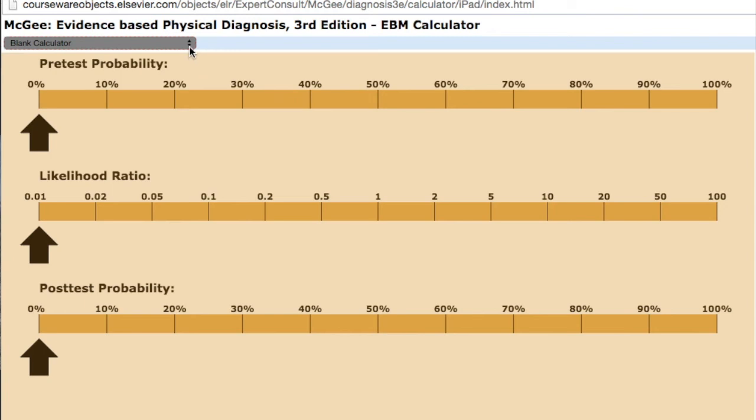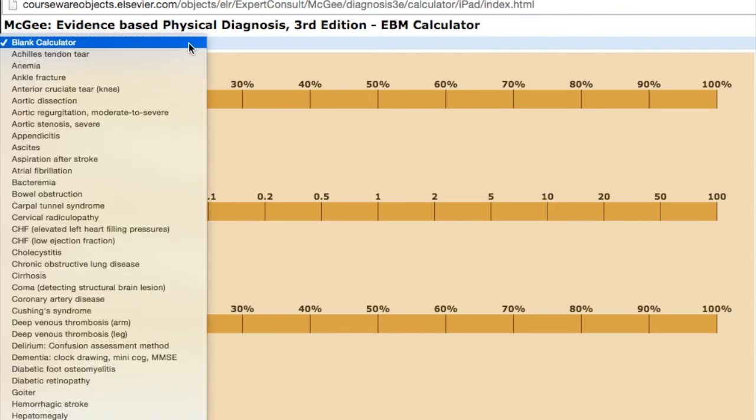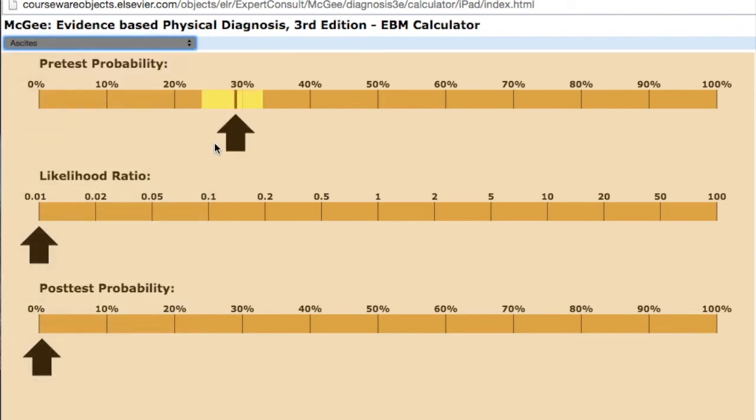So let's use McGee's evidence-based physical diagnosis calculator to see how some of these physical exam findings will change our thinking about the diagnosis of ascites. So we choose ascites from the drop-down menu. It gives us a pre-test probability of around 30%, but remember this is going to be different based on the population you're working with and your patients presenting symptoms, past medical history, etc.